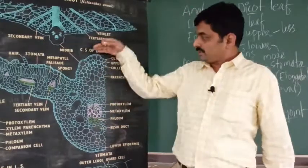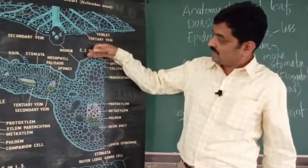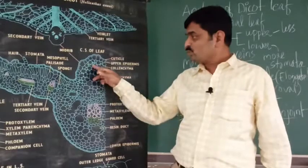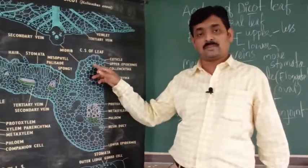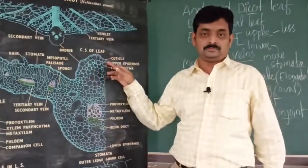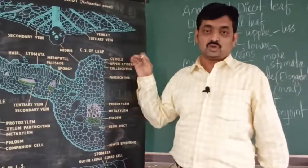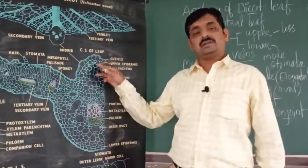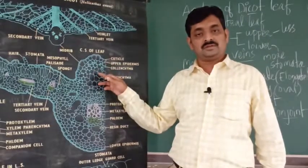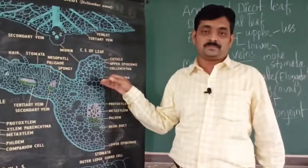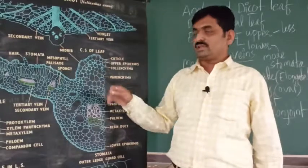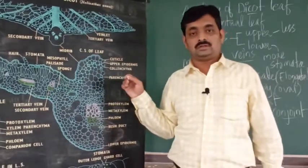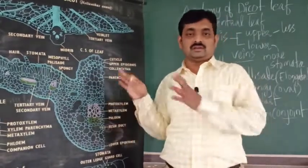In the mid rib region, below the upper epidermis, you can observe a small part called hypodermis where you find colenchyma cells. Colenchyma cells are present in the mid rib region below the epidermis.